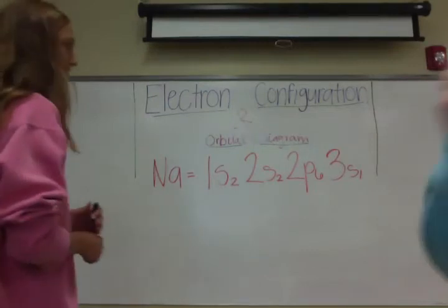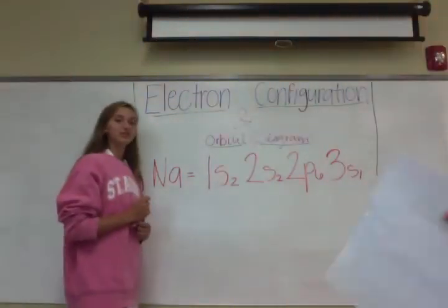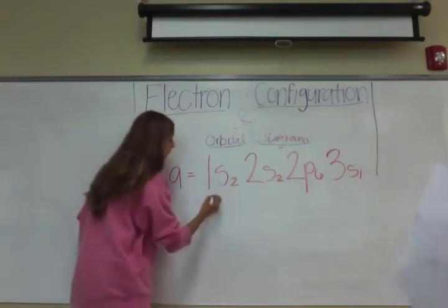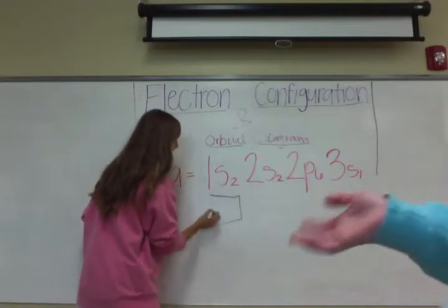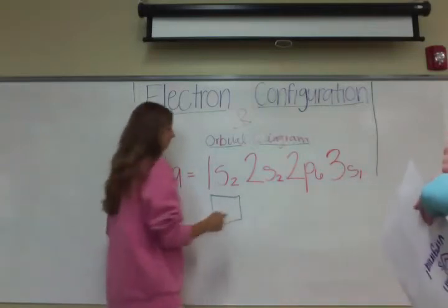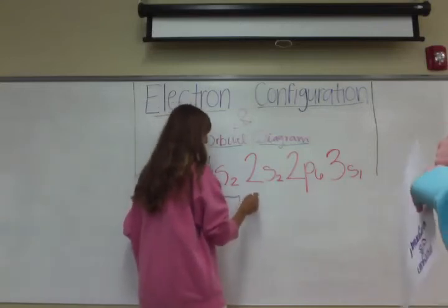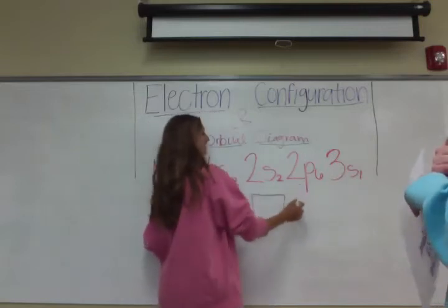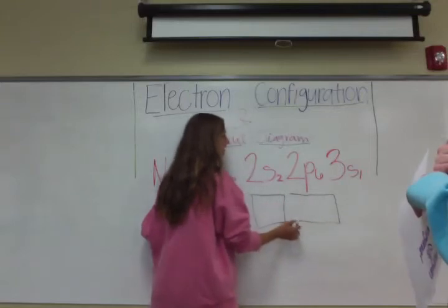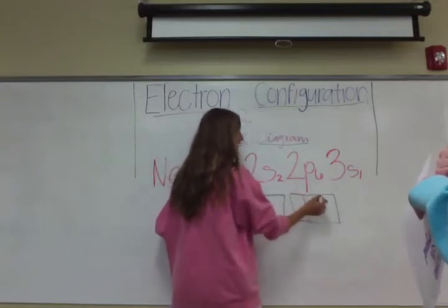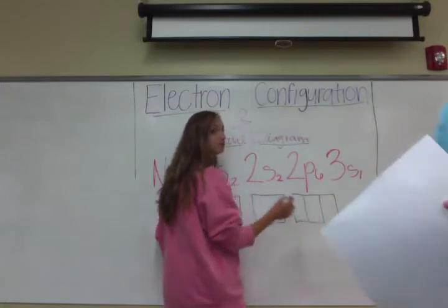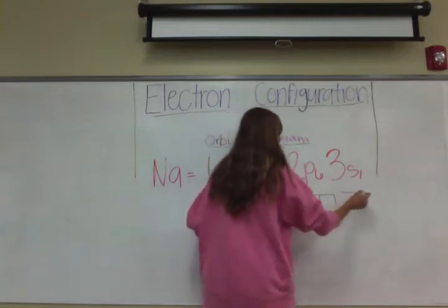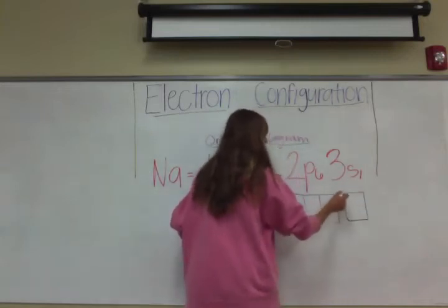Now we're going to show you how to do an orbital diagram. First you start off with drawing the boxes. For 1s² you only need one box because s represents one box. For 2s² you would only have one box. For 2p⁶ you need three boxes. If you had d, it would be five boxes. Then here we have another s, so only one box.